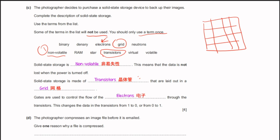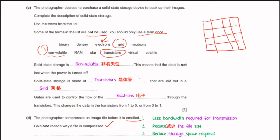Part D: the photographer compresses an image file before emailing it. Reasons to compress a file include: less bandwidth is required for transmission, reduced file size, and reduced storage space required.